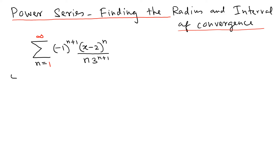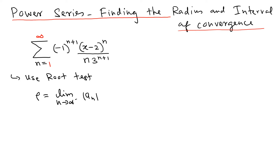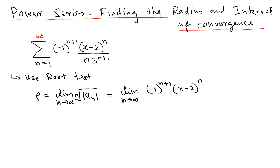Using the root test, we're going to calculate what's called rho, which is the limit as n goes to infinity of the nth root of the absolute value of the nth term a_n. So we calculate the limit as n goes to infinity of the nth root of the absolute value of negative 1 to the n plus 1 times x minus 2 to the n, divided by n times 3 to the n plus 1.